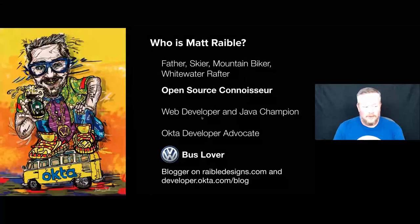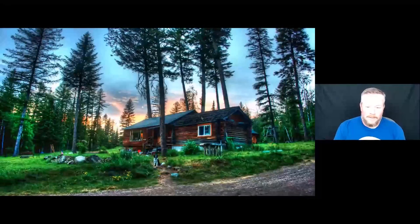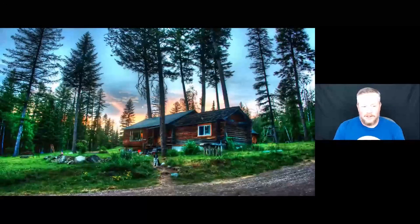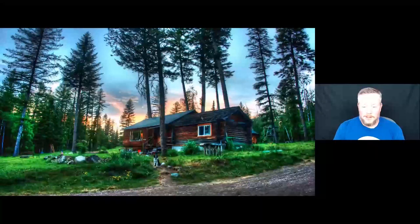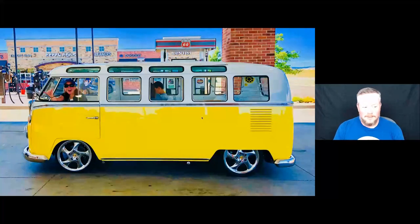My name is Matt Raible — I like to ski, mountain bike, and whitewater raft. I was born in the backwoods of Montana in a log cabin built by my great grandparents in 1917 — no electricity, no running water, an outhouse, and a two-mile walk to the bus stop for 16 years. I live in Denver, Colorado with my wife Trish and kids Abby and Jack. I also have a middle child named Hefe — a German vehicle I bought off eBay in 2004 and spent 12 years restoring.